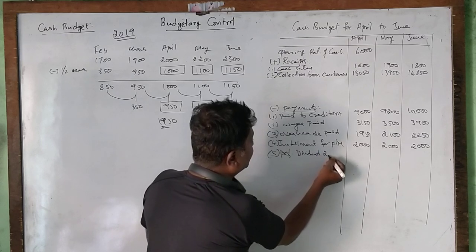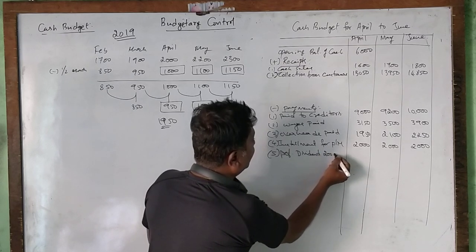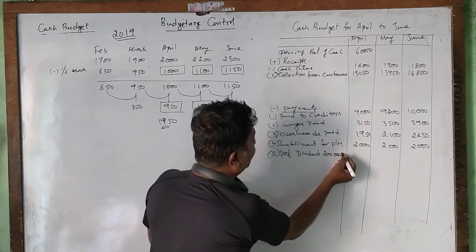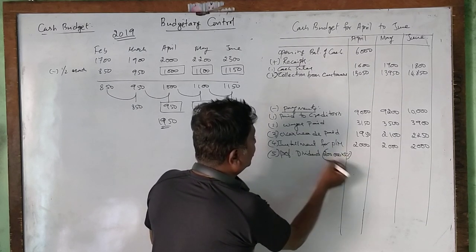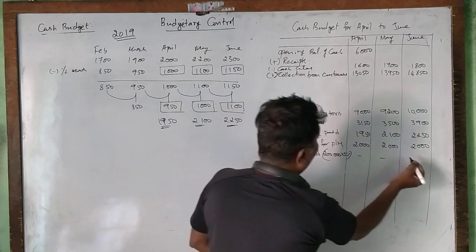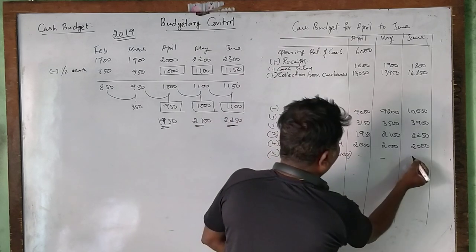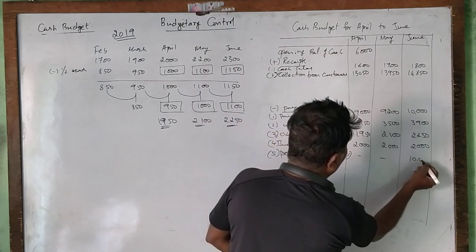Preference dividend calculation: two lakhs at five percent equals 10,000 rupees. So the preference dividend is 10,000 rupees, to be paid in June.